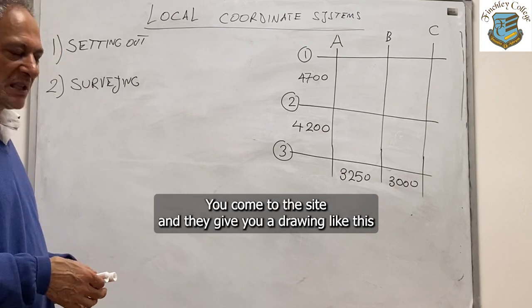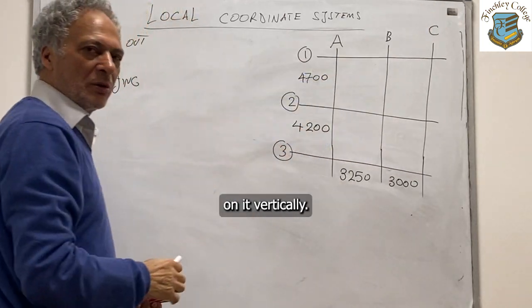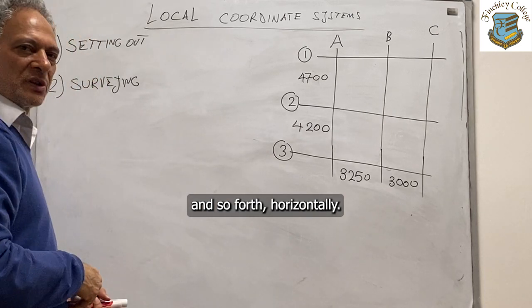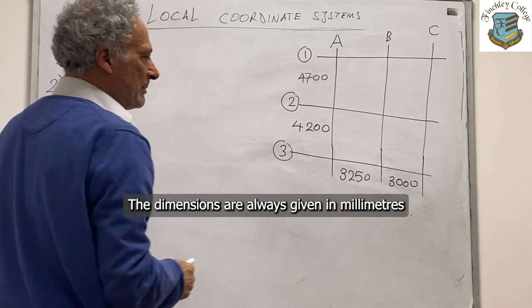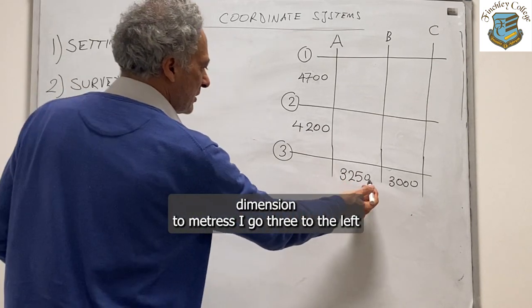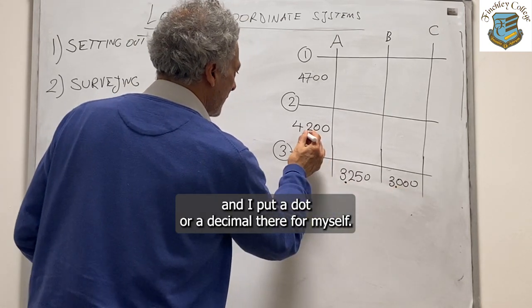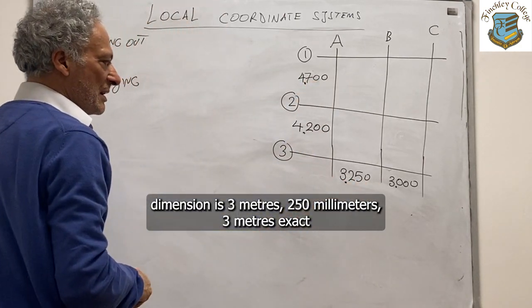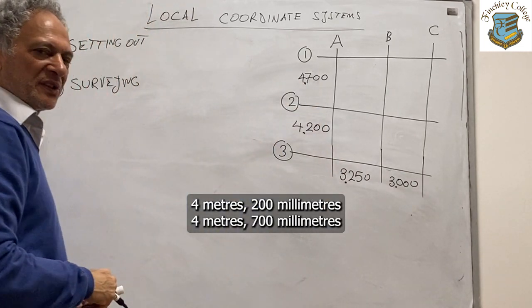You come to the site and they give you a drawing like this, and it has grid lines A, B, C etc. on it vertically, and grid lines 1, 2, 3 and so forth horizontally. The dimensions are always given in millimeters, so if I want to convert that dimension to meters, I go 3 to the left and put a dot there. So that dimension is 3 meters 250 millimeters, 3 meters exact, 4 meters 200, 4 meters 700.